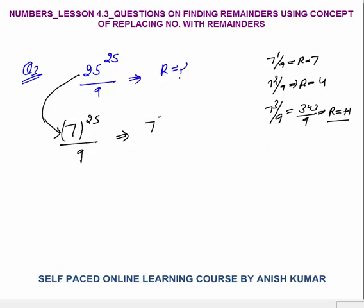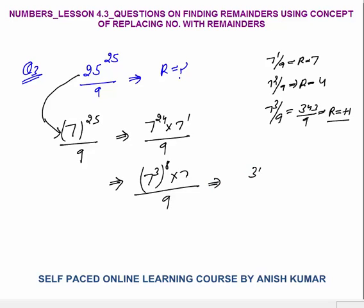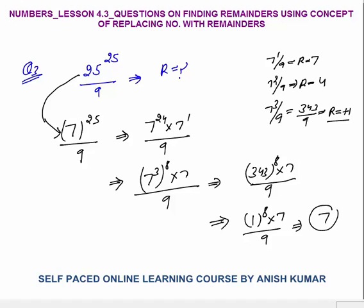Since 7^3 ÷ 9 has remainder 1, I break 7^25 as 7^24 × 7^1. Writing it as (7^3)^8 × 7 = 343^8 × 7 ÷ 9. Replacing 343 with its remainder 1, this becomes 1^8 × 7 ÷ 9. The remainder is 7 by 9, so the final answer is 7.